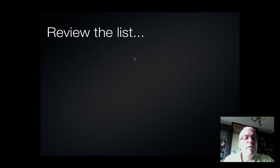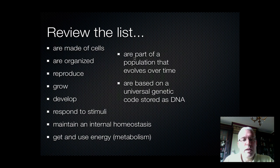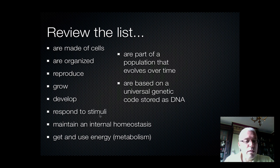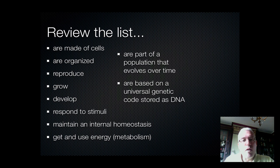Let's review the list. All living things are made from cells. They're organized. They reproduce. They grow and develop. They respond to the world around them. They maintain some type of internal balance. They take in and use energy in a metabolic series of processes. They evolve as part of a population through time. And they pass on genetic code stored in a chemical called DNA.